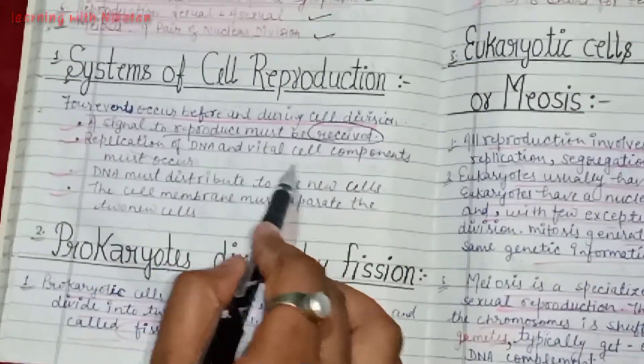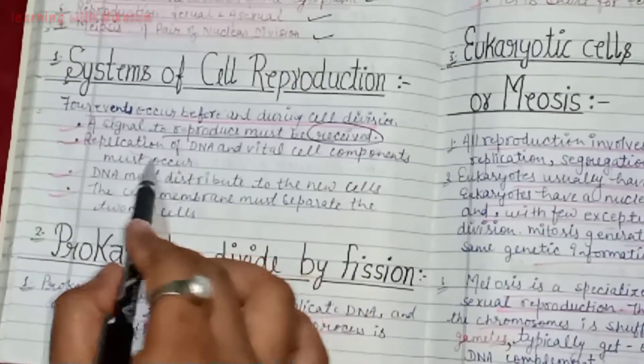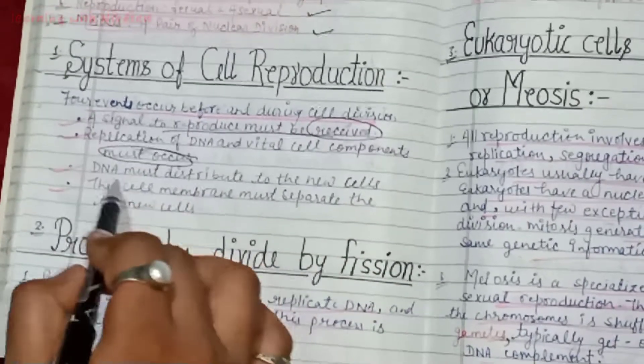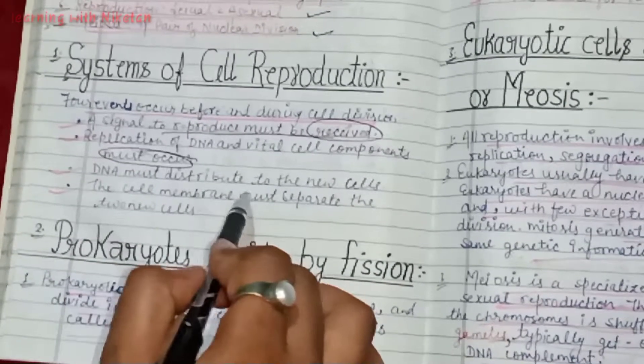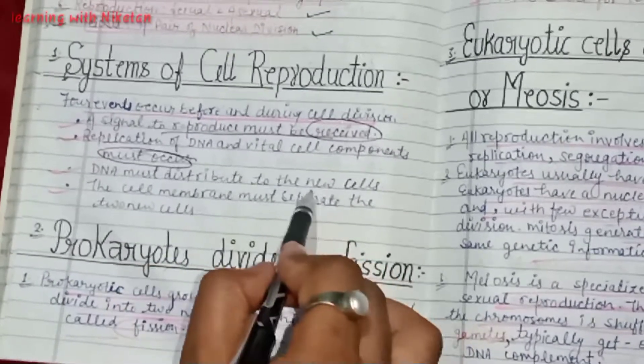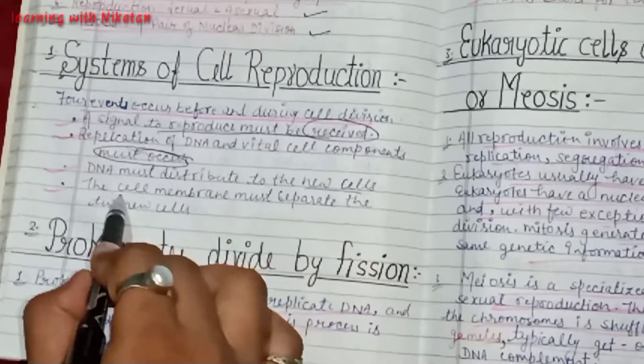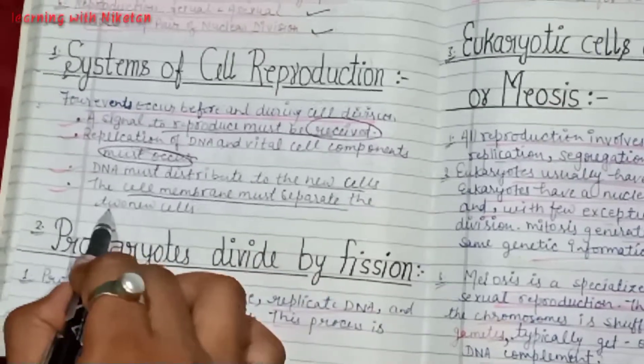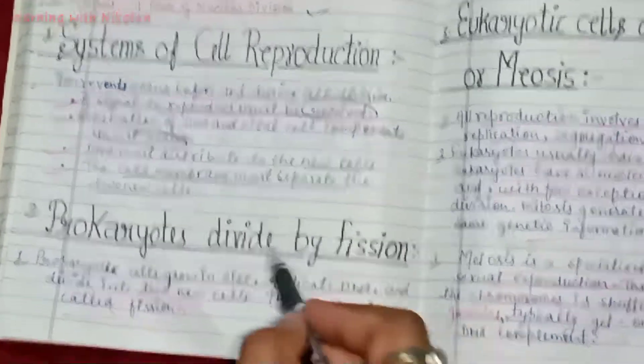Replication of DNA and vital cell components must occur. DNA must distribute to the new cells. The cell membrane must separate the two new cells.